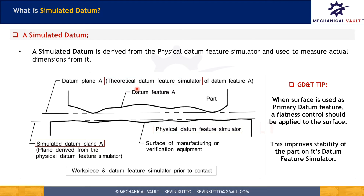To measure dimensions, the part is placed on the surface plate. Even though the surface plate also has certain variations, those are very small because the manufacturing processes used are very refined. We place the height gauge on the surface plate and measure the heights of the part. This surface plate establishes the simulated datum plane A, from which all dimensions are measured. That is how the simulated datum is used to measure actual dimensions on the part.